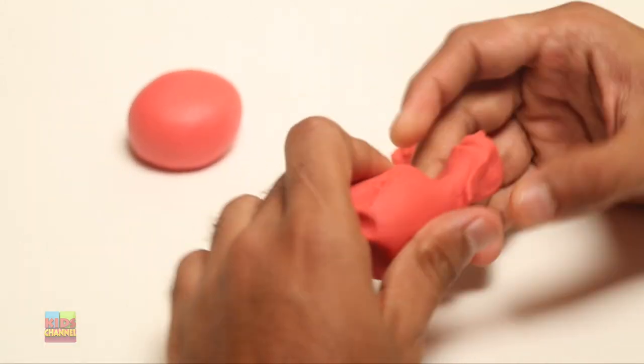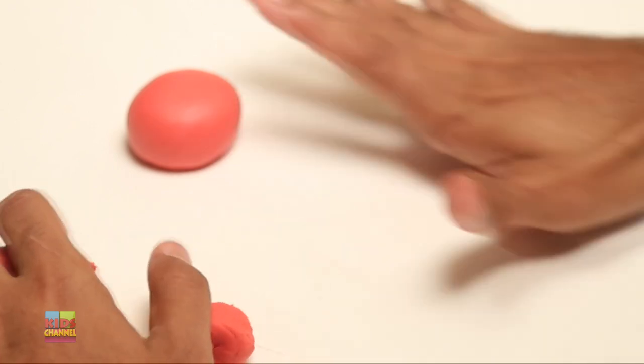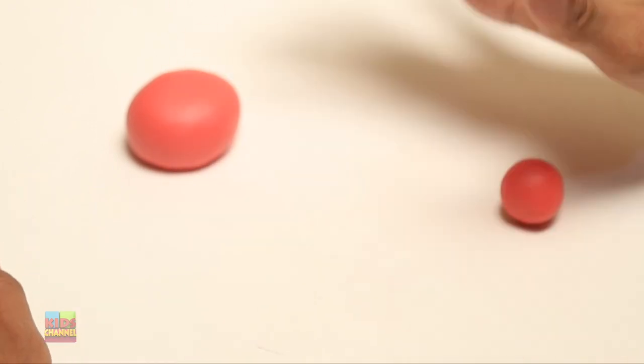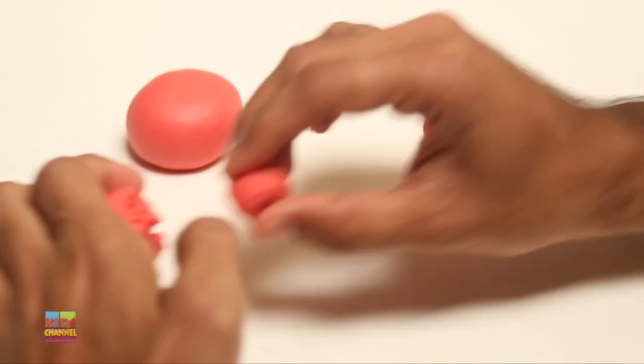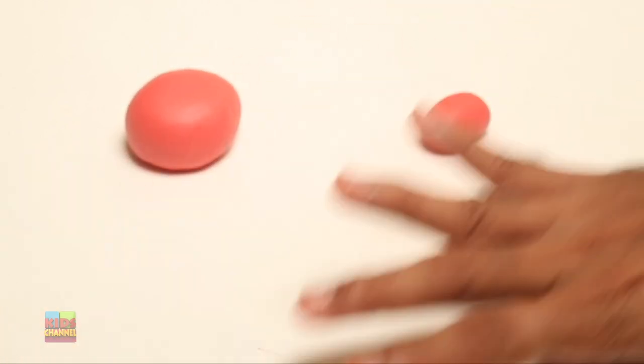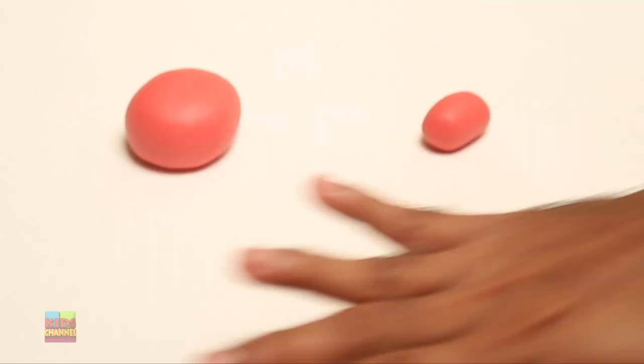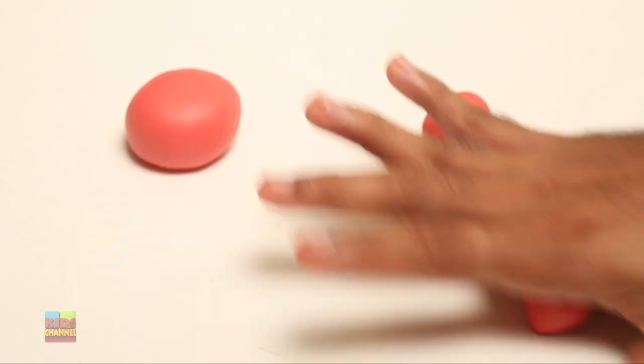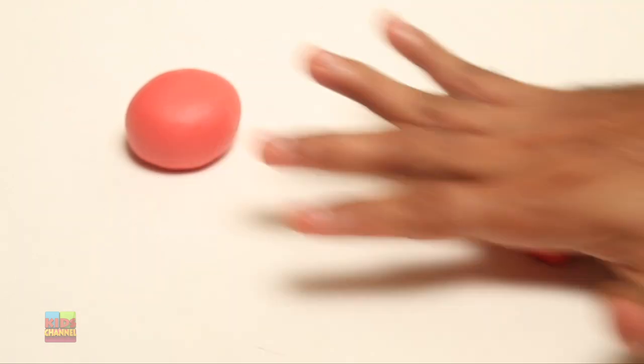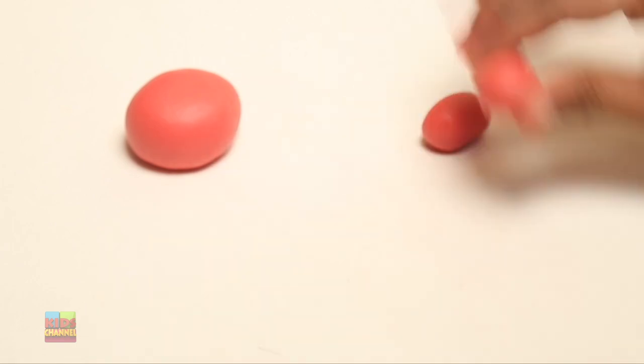Now let's take a piece about a third of the size, maybe a quarter of that size, and roll that also into a ball. Take another piece exactly the same size as that second one and repeat. A circular motion with the palm of your hand turns it into a ball shape. And there you go. Just put those two aside.